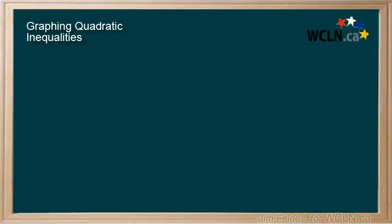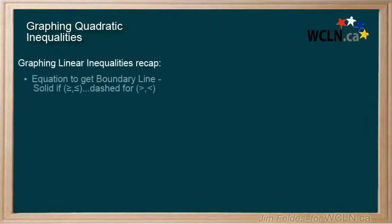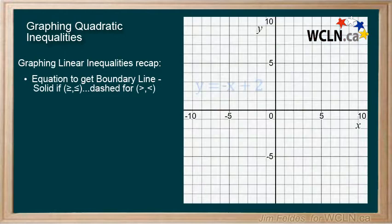Graphing inequalities was introduced when we looked at two variable linear inequalities. We showed how by making the statement an equation, we generate a boundary line that forms the border of our solution. A solid line was used if points on the line were to be included because the inequality symbol includes equal to, and a dashed line was used if they were excluded.